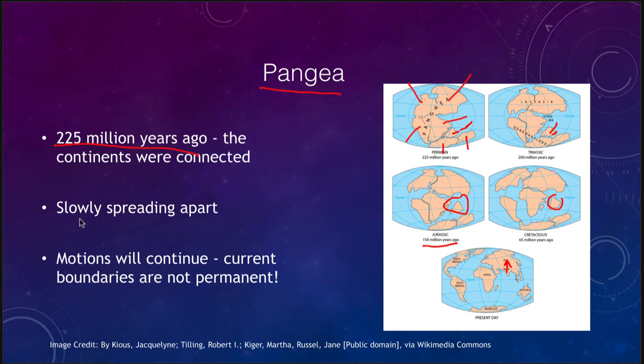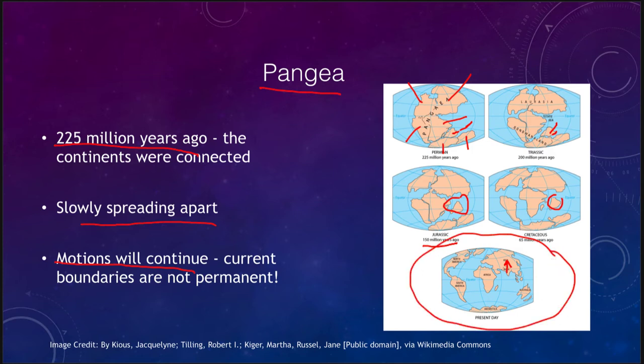While plates are slowly spreading apart and moving around relative to each other, these motions will continue. What we see today for the Earth is not what the continents would look like in 50, 100, or 200 million years. These motions will continue — continents will separate and come back together again. The boundaries we see today are not permanent; if we could come back in 100 million years, we would see quite different continental boundaries.